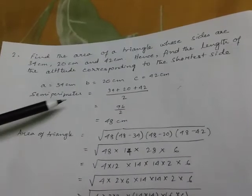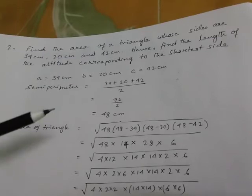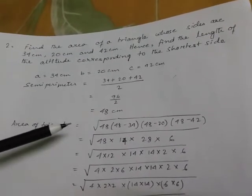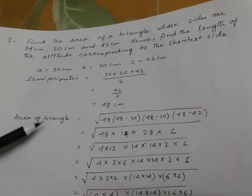Semi-perimeter goes like this: 34 plus 20 plus 42 divided by 2, which is equal to 96 by 2, 48 centimeter. Now, putting in the formula area of a triangle.